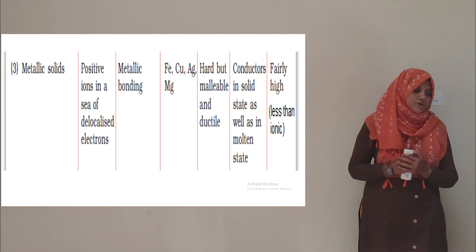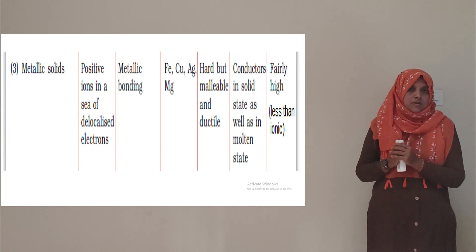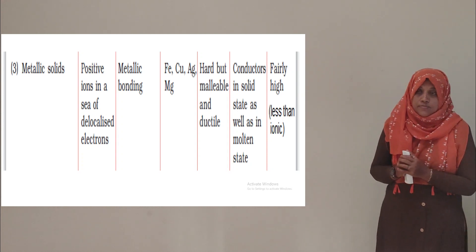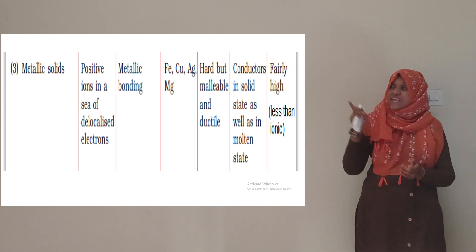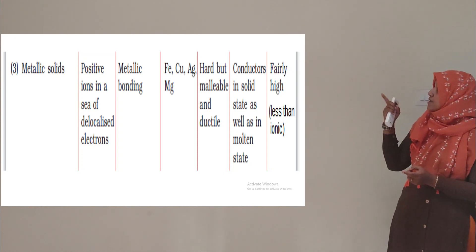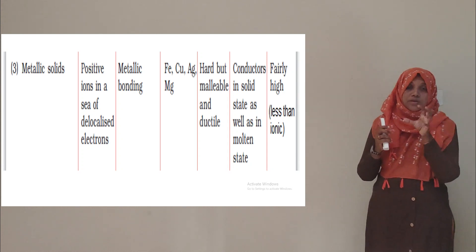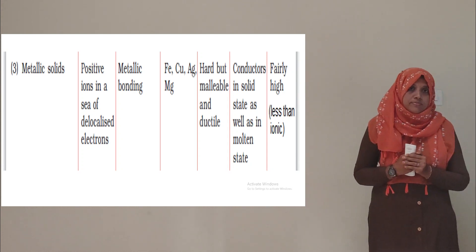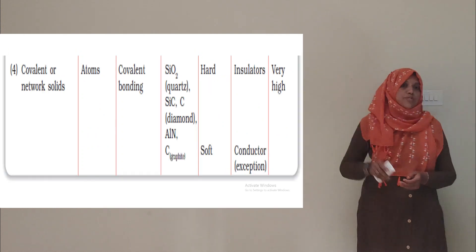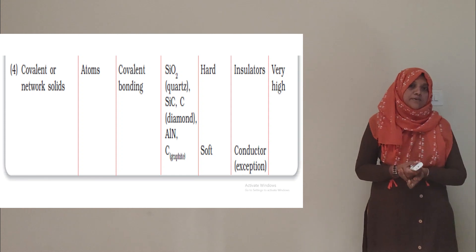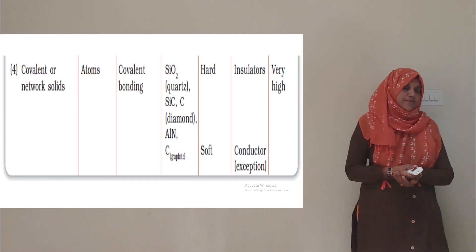Metallic solids are good conductors of heat and electricity because there are free electrons. The last type of crystalline solid is covalent solid, also called network solid.